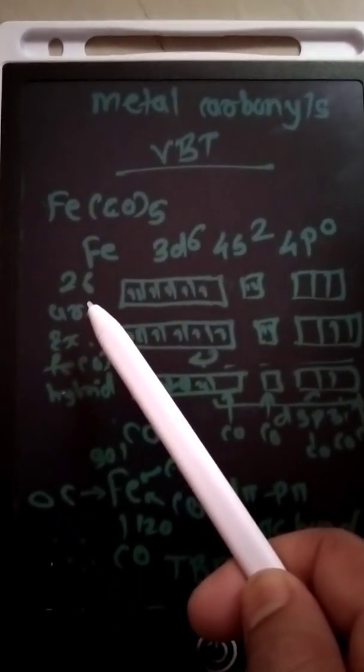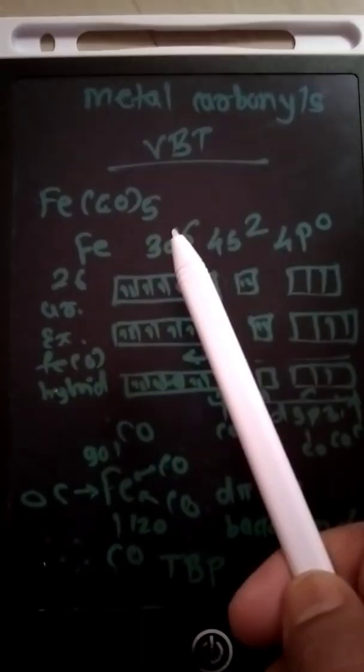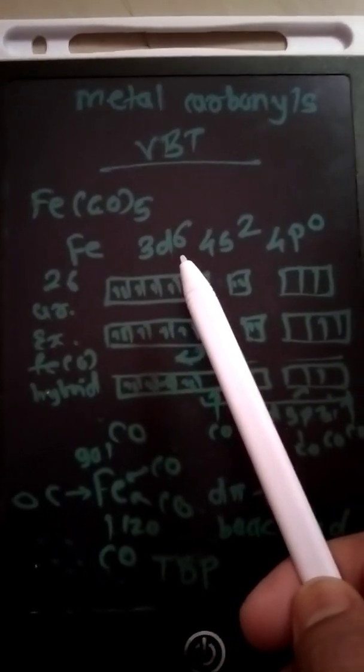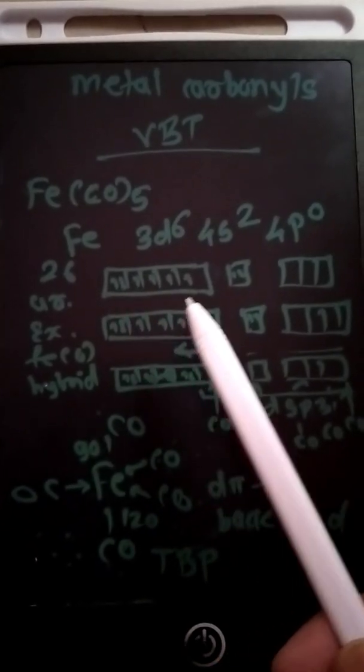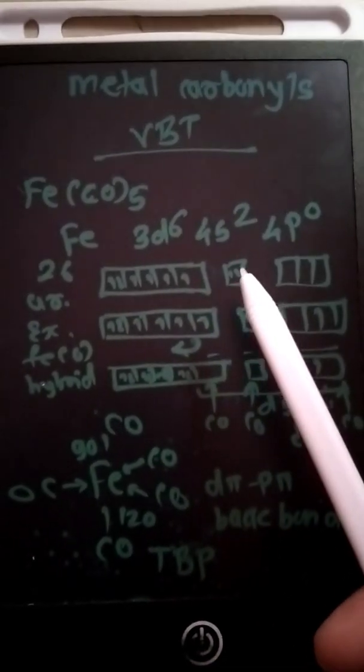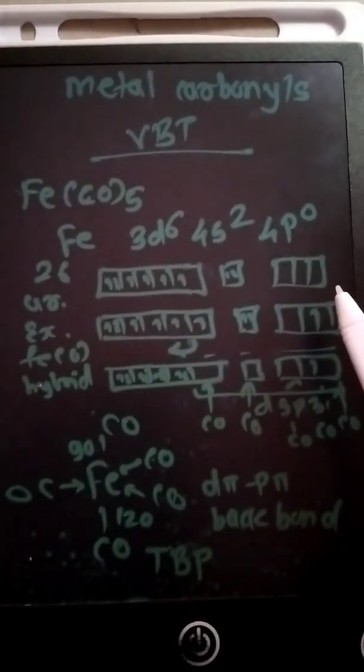So here, Fe has atomic number 26. According to valence bond theory, its valence configuration is 3d6 4s2 4p0. At ground state, it consists of six d electrons, two s electrons, and zero p electrons.